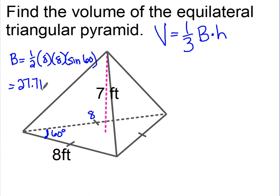Okay, so that's coming over here. I still have my one-third, my base area is 27.7128, and the height of this thing is 7. The height of a pyramid goes from the center to the tallest point. In this case, the height is 7.